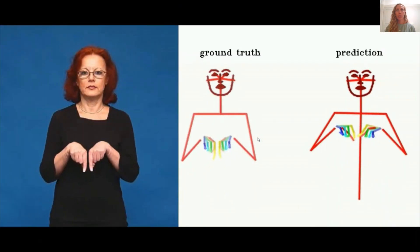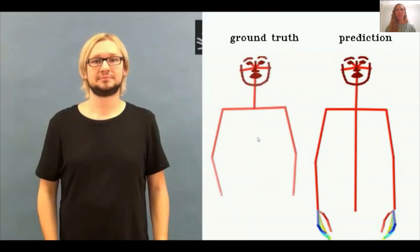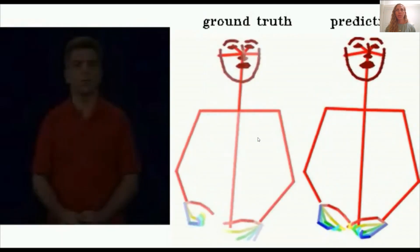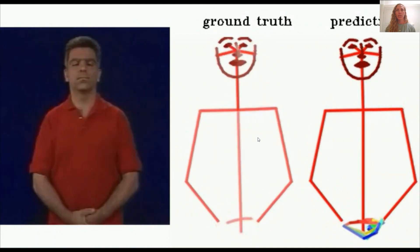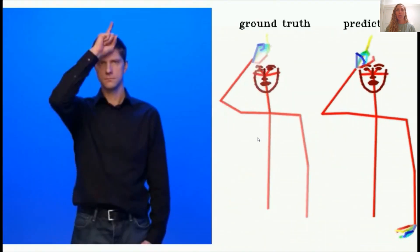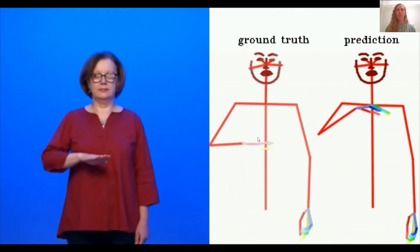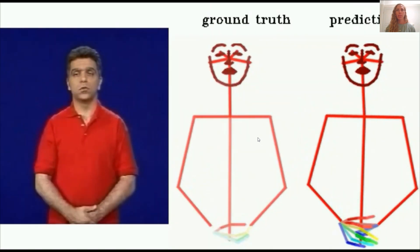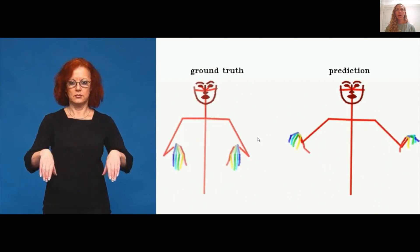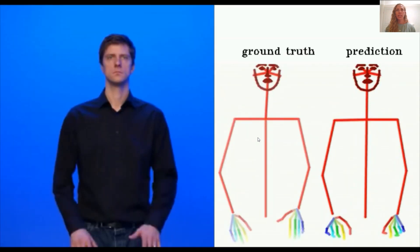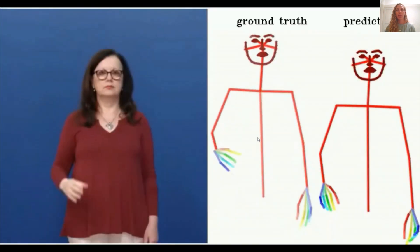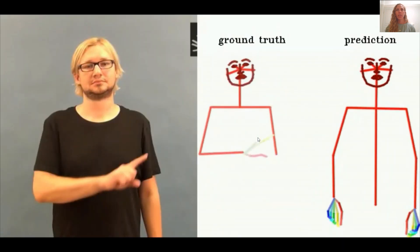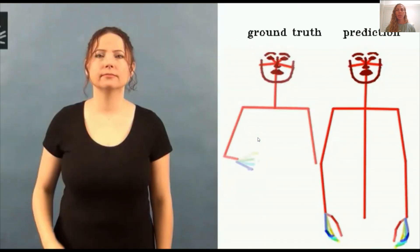Some results of our model are presented here. The leftmost video is the original video, the middle one is the ground truth pose as extracted from the original video using OpenPose after our preprocessing, and the rightmost video is our prediction created from the HamNoSys sequence. Semi-transparent colors in the ground truth indicate keypoints that are missing. Note that our predictions are complete and correct even when the ground truth is not.